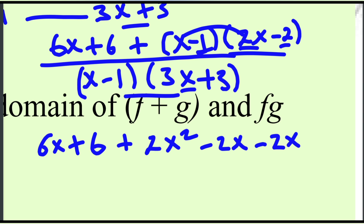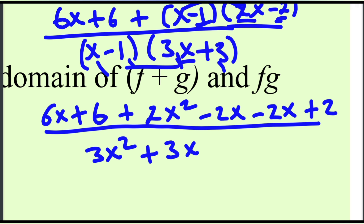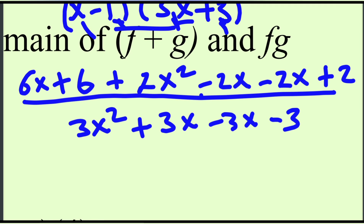Negative 2x, negative 1, minus 2x plus 3x, over x minus 1 times minus 1 times x minus 1 times plus 3x minus 1, minus 3x minus 3x, minus 1 minus 3x, negative 3. Result: 0.